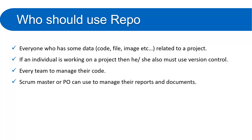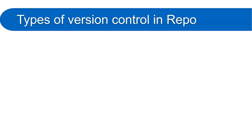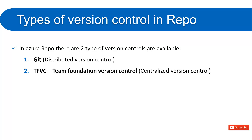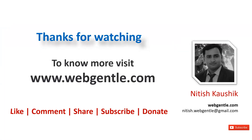The Product Owner can also use Azure Repo to track all changes happening in reports or other documents. Now, let's understand what different types of version control are available in Azure Repo. There are two types: the first is Git, the most popular version control used in today's software development, and it is a distributed version control system. The second is TFVC — Team Foundation Version Control — which is a centralized version control system. The differences between these and which one to use for your project will be covered in the next part of this tutorial.